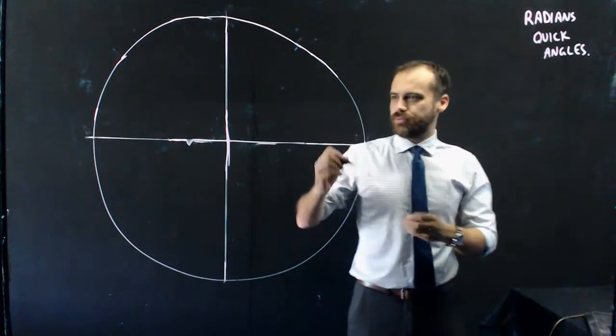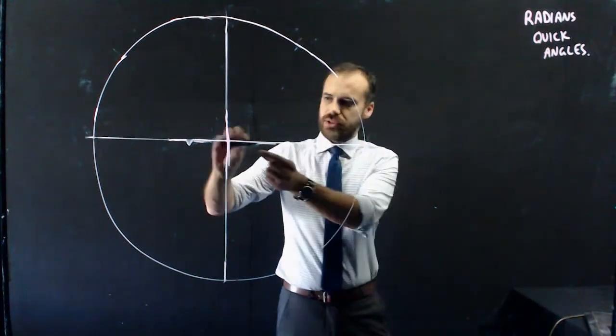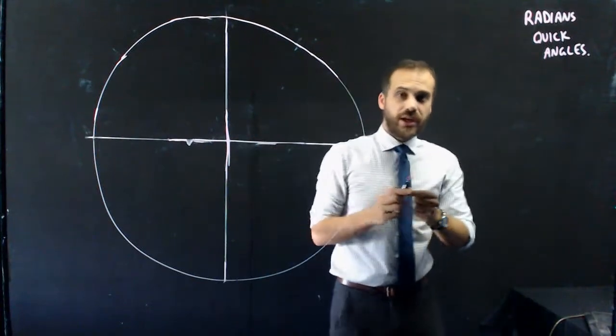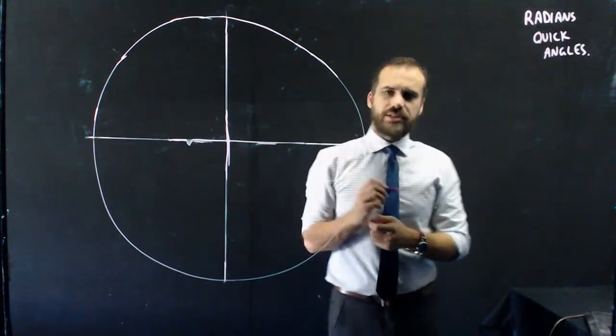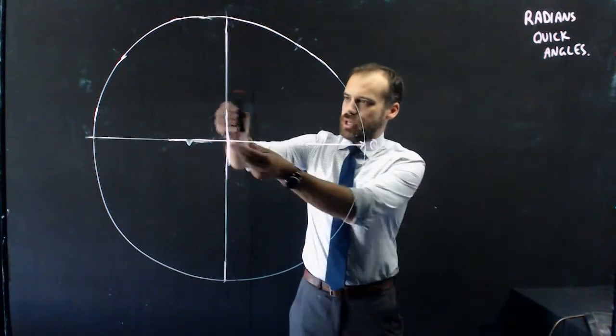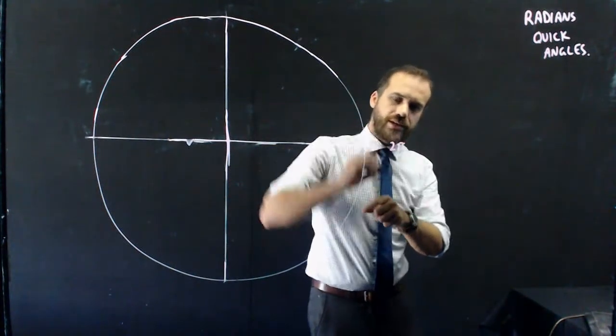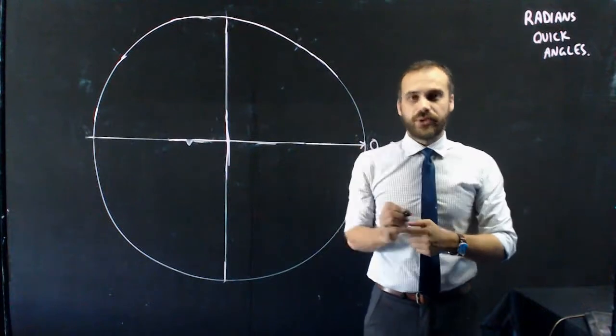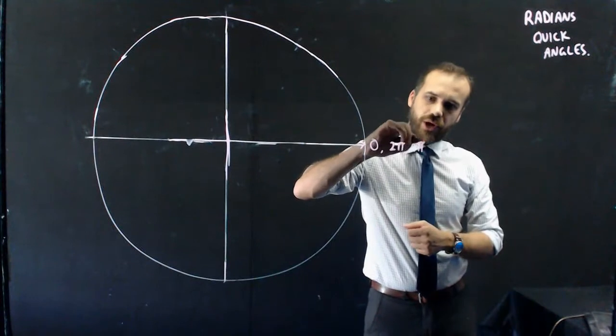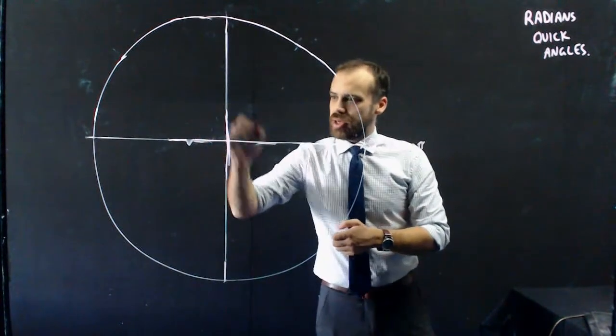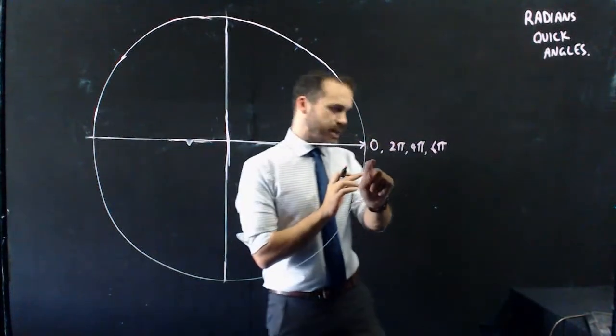Let's always start from our x-axis pointed in this direction. If the skateboarder doesn't turn at all, that's 0. If the skateboarder does a full 360, they do a full 2π radians. If the skateboarder does a spin followed by another spin, they will do 4π radians. A spin, a spin, a spin - they will do 6π radians. You see what's happening here: 0, 2π, 4π, 6π, 8π.